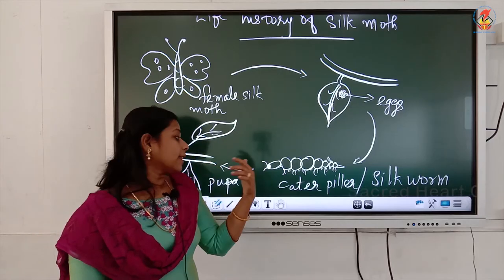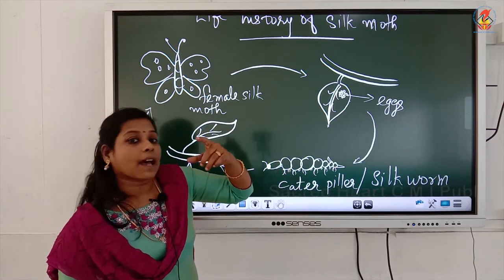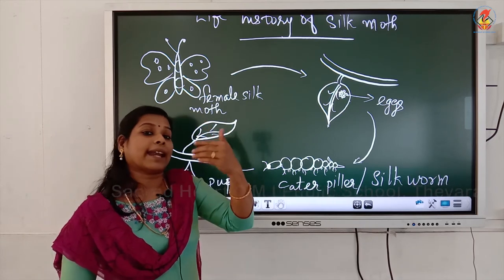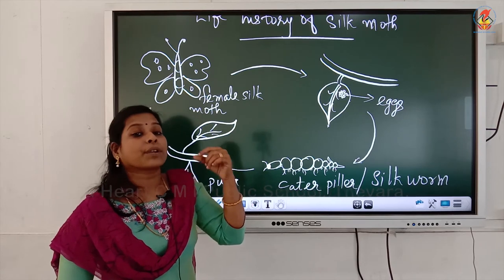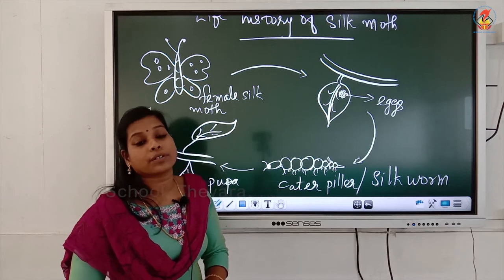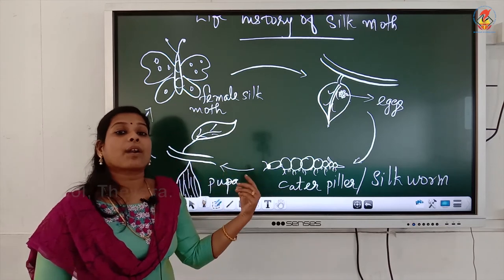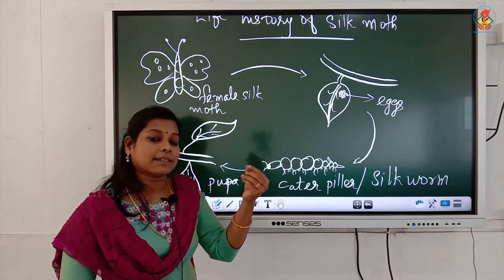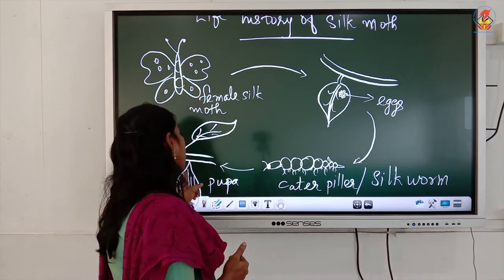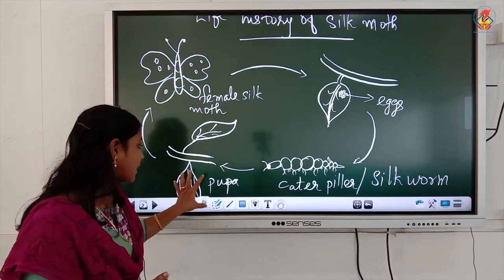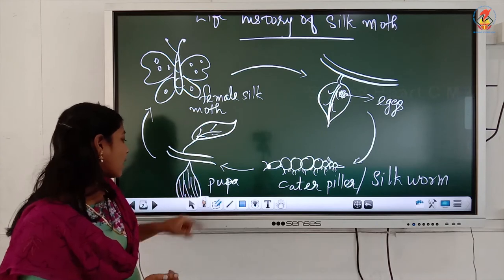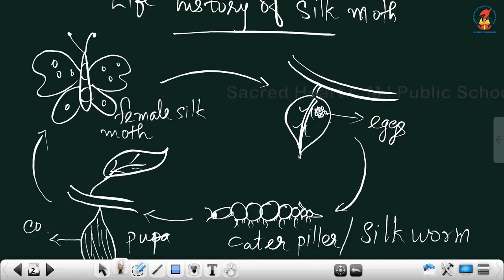During the pupa stage, the caterpillar swings in a sidewise position, moving its head side to side, and starts producing a protein. That protein hardens on exposure to air, and fine fibers are produced. That protein becomes hard, and the caterpillar weaves a net basket for itself to hold inside. This outer covering is known as cocoon.